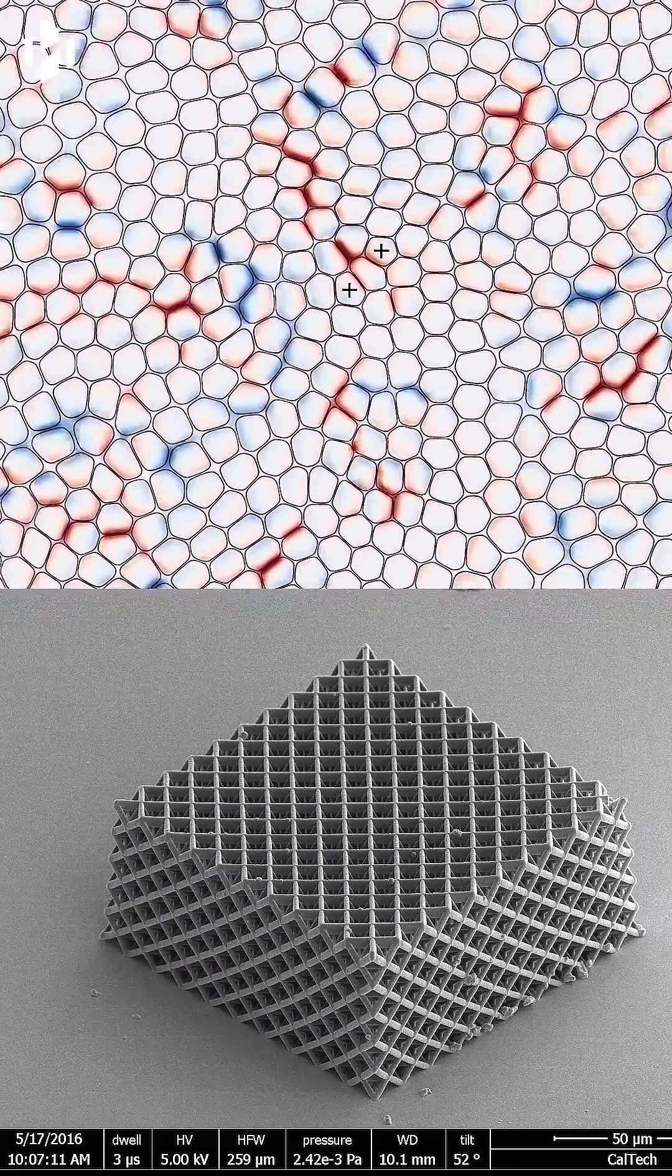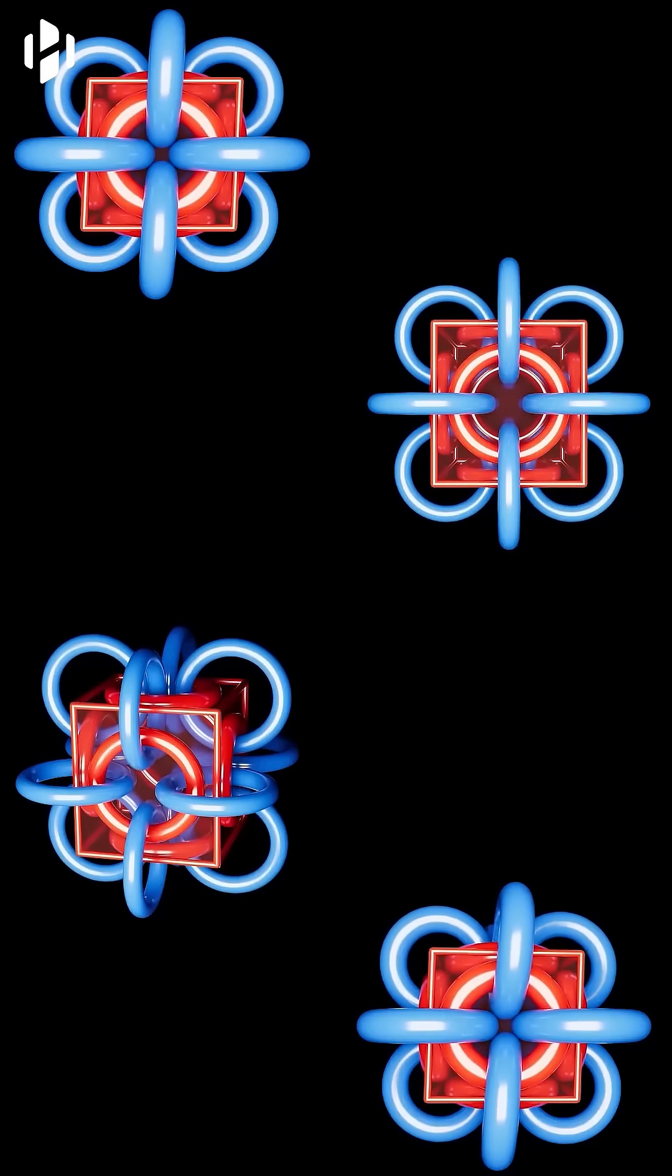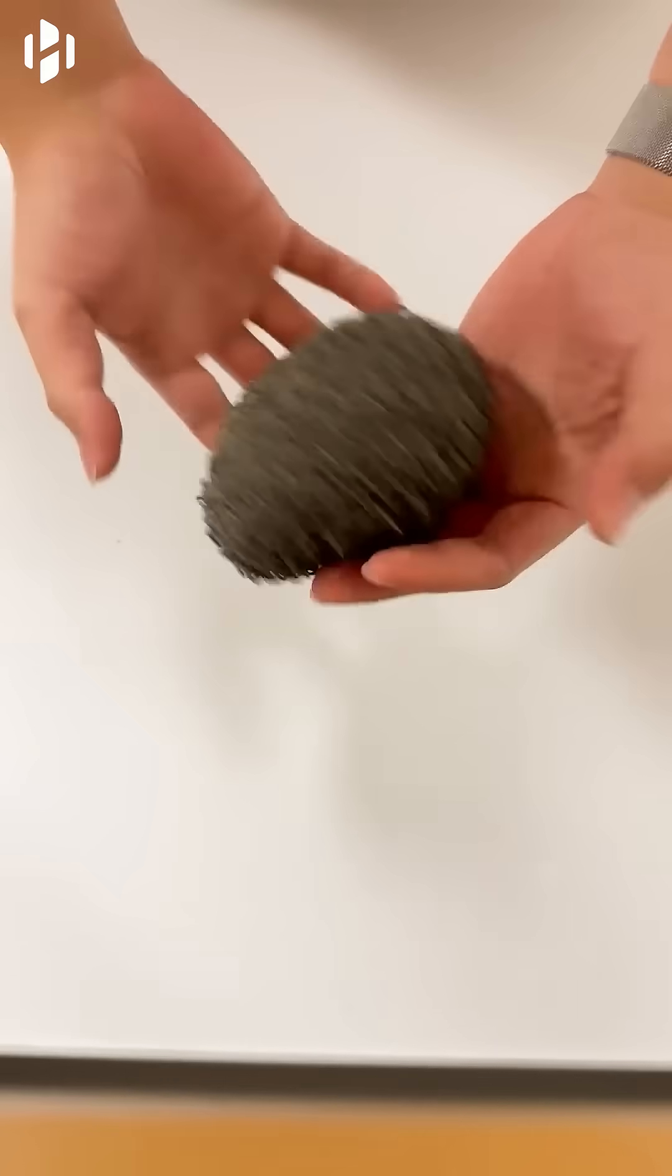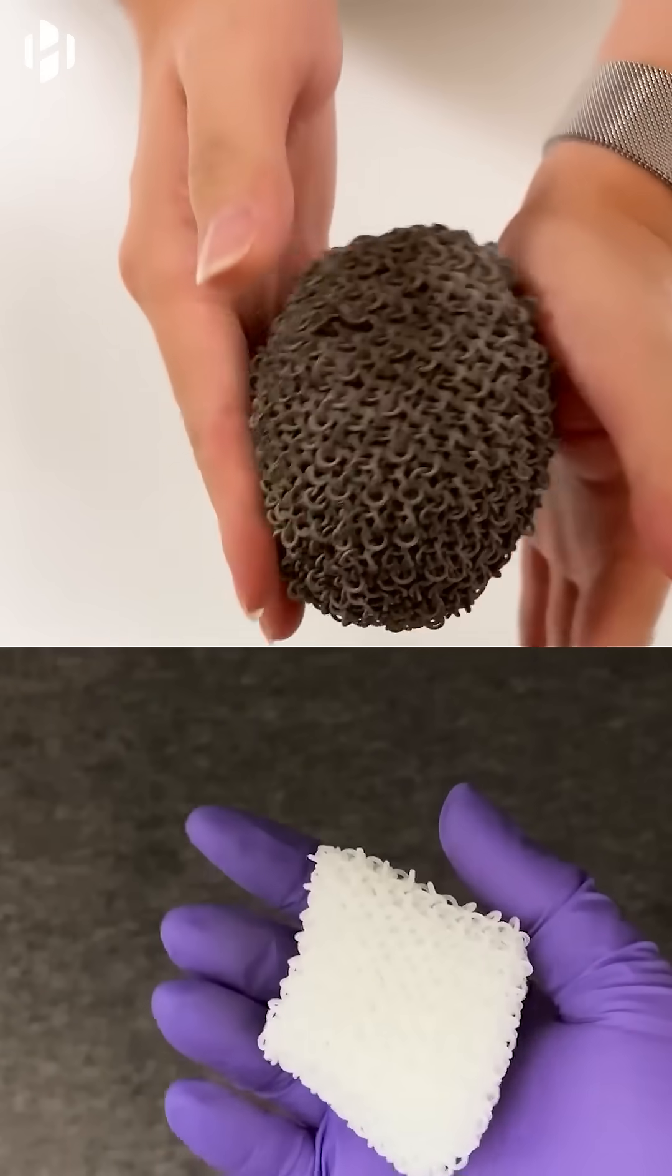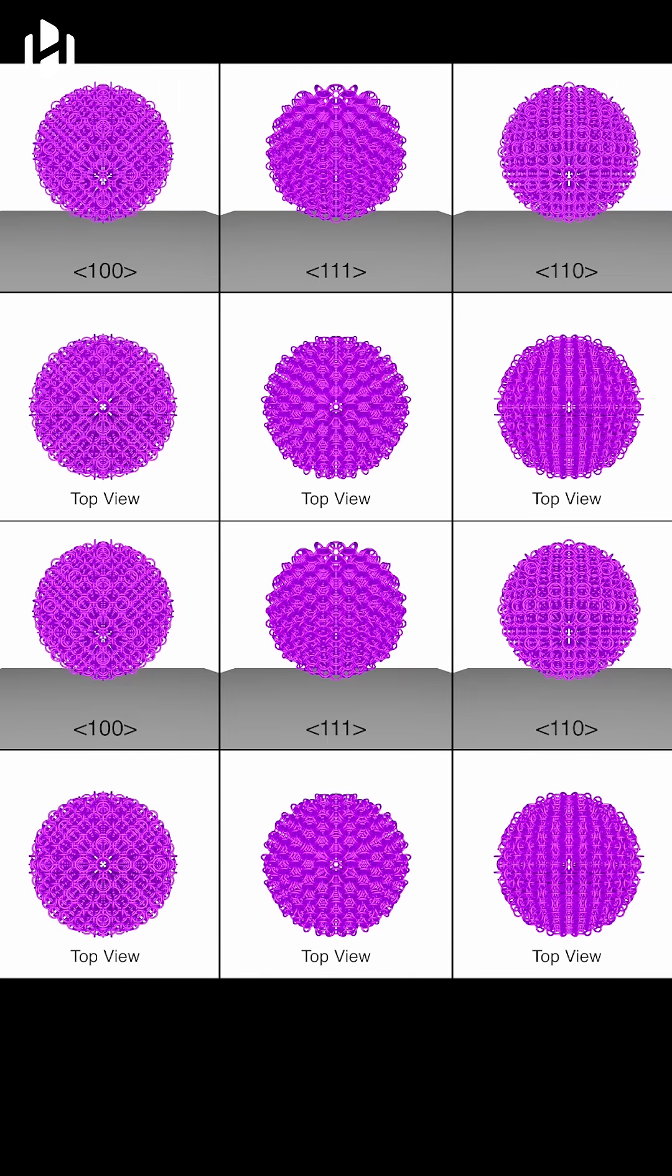This dynamic behavior is achieved through the intricate design of PAMs. Researchers at Caltech create these materials using three-dimensional printing. They begin by modeling the structures on a computer.